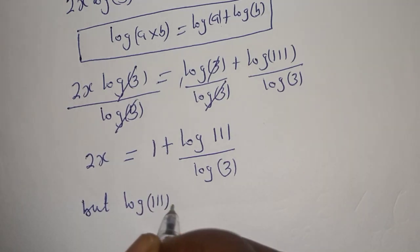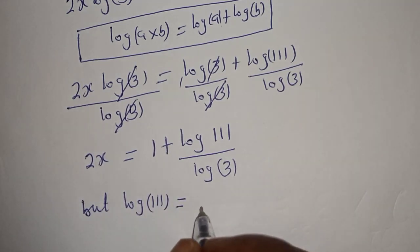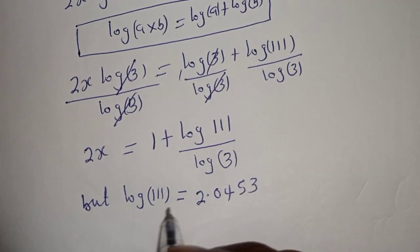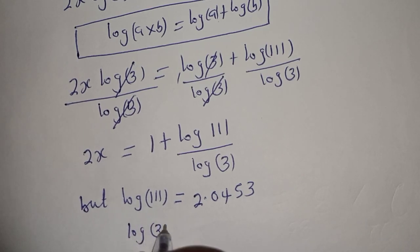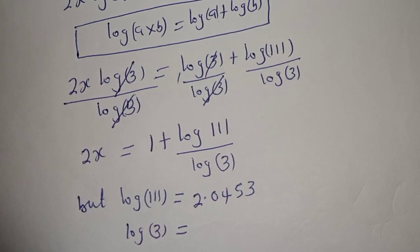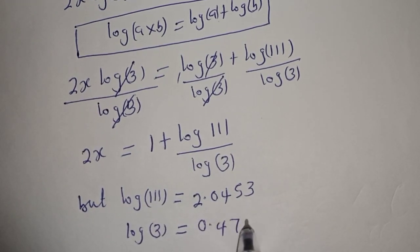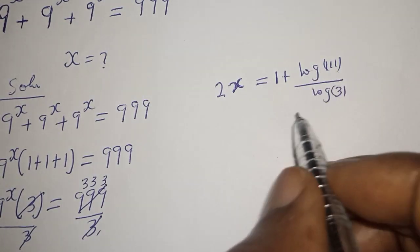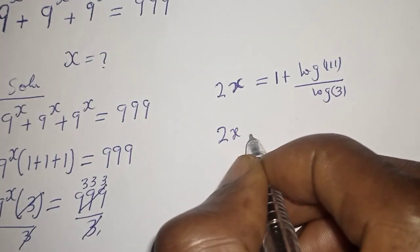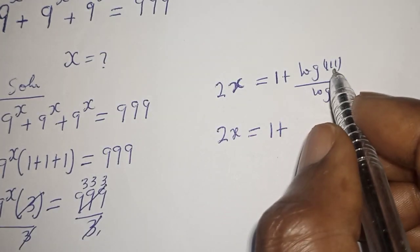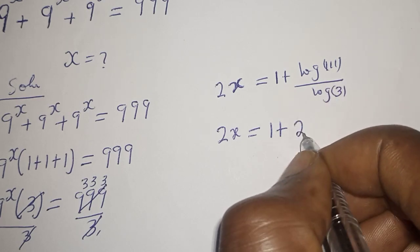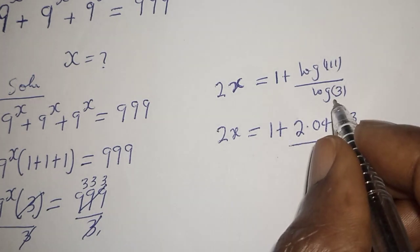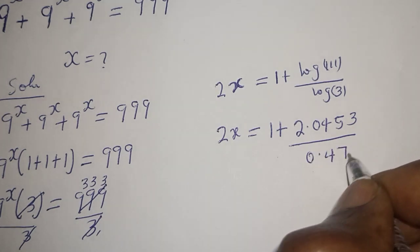Log 111 is equal to 2.0453 and log 3 is equal to 0.4771. Then 2s is equal to 1 plus log 111 over log 3, which is 1 plus 2.0453 over 0.4771.